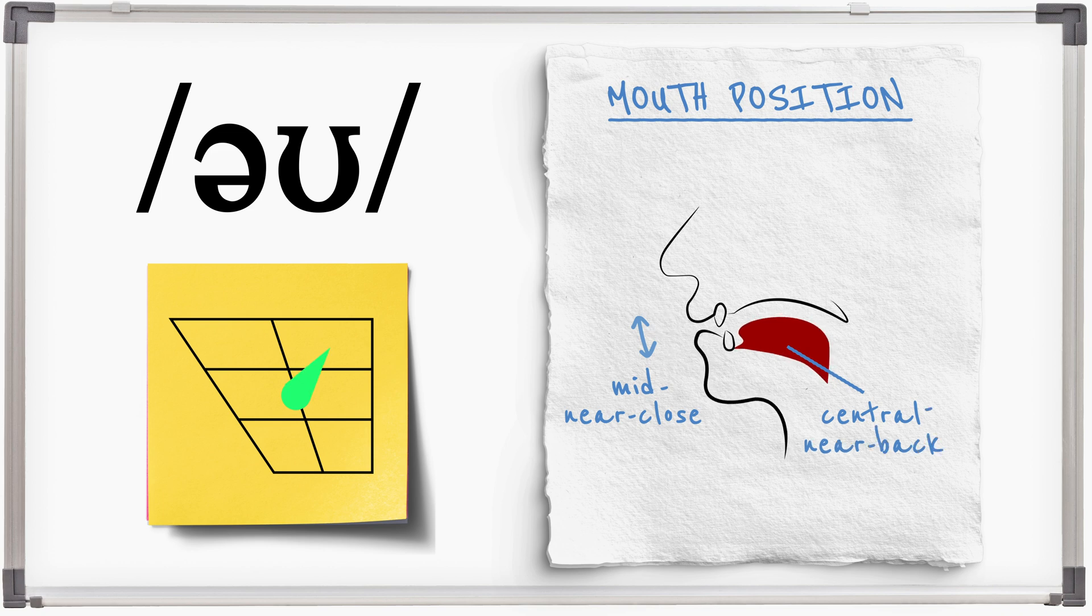The first part of the diphthong is unrounded, U, and the second part can be slightly rounded, U, or unrounded, U, O.